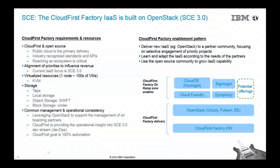Our requirements: our primary delivery was a public cloud using industry-recognized APIs. We needed to reach a big ecosystem. Our virtualization was KVM. For storage, we needed the ability to connect to tape, local storage, object store, and block storage. We leveraged OpenStack to manage all of our infrastructure, and the Cloud First Factory would provide operational insight into SCE — discovering what was possible with OpenStack and sharing what we learned to the group building SCE 3.0.